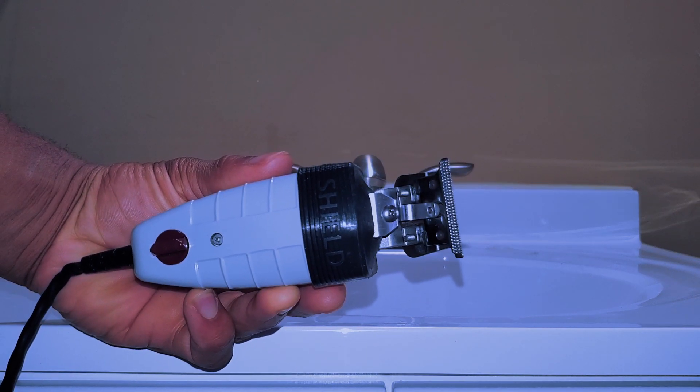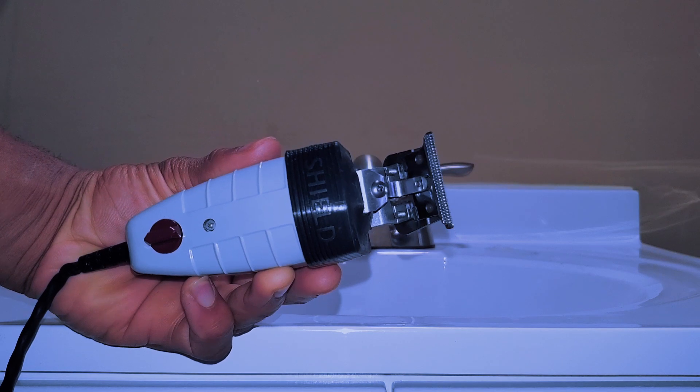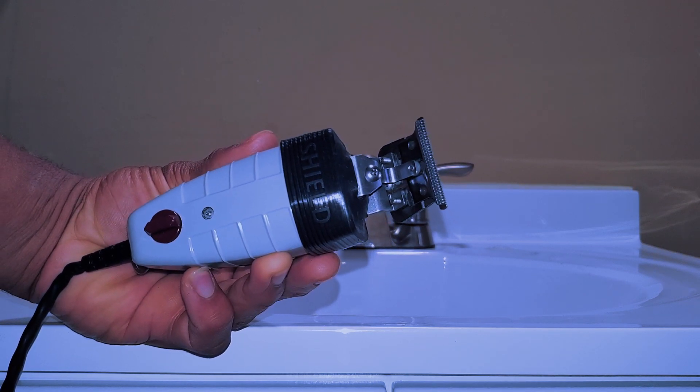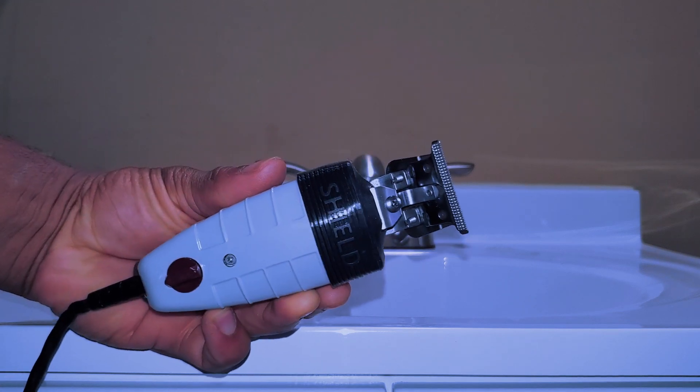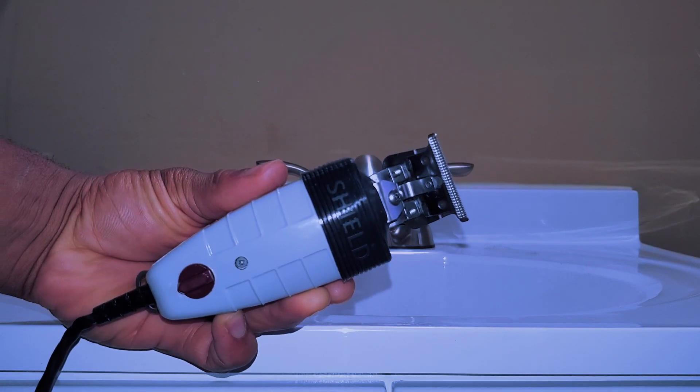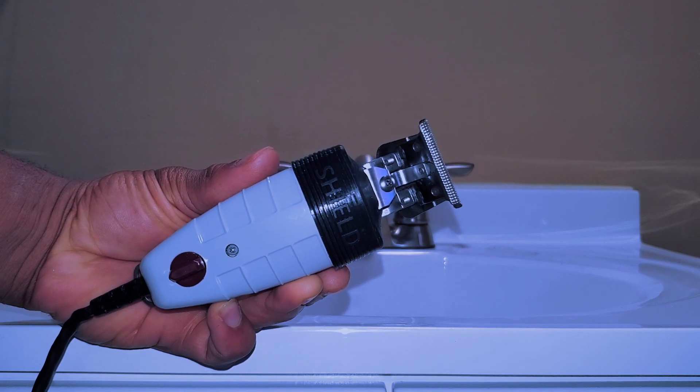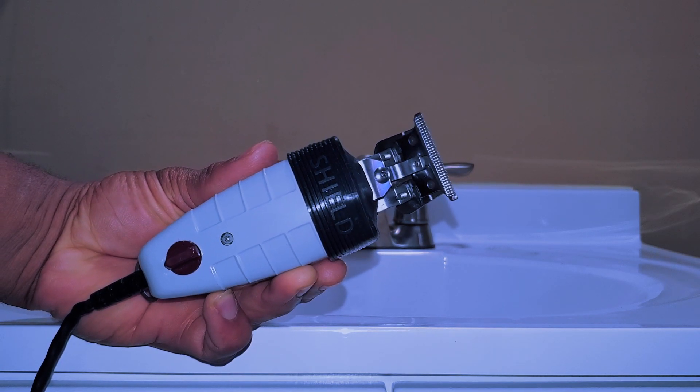Like I said, if you cut a lot of hair and you're afraid of stuff getting in the trimmers, this is definitely something that I would invest in. So again, the Shield by Diamond Cuts gets my thumbs up. It says it fits the Outliners 1, Outliners 2, and the GTX trimmers, just in case y'all was wondering.